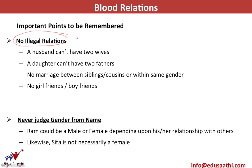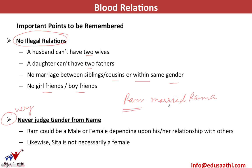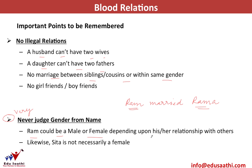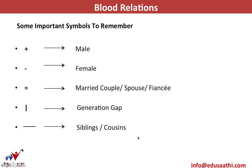Before we start, here are some important points to remember. No illegal relations are allowed in exam questions — a husband cannot have two wives, a daughter cannot have two fathers, no marriage between siblings or cousins, and no same-gender marriage. Never assume boyfriends or girlfriends. Very importantly, never judge a gender from a name. For example, a person named Ram could be male or female — go by the relationship mentioned, not the name.